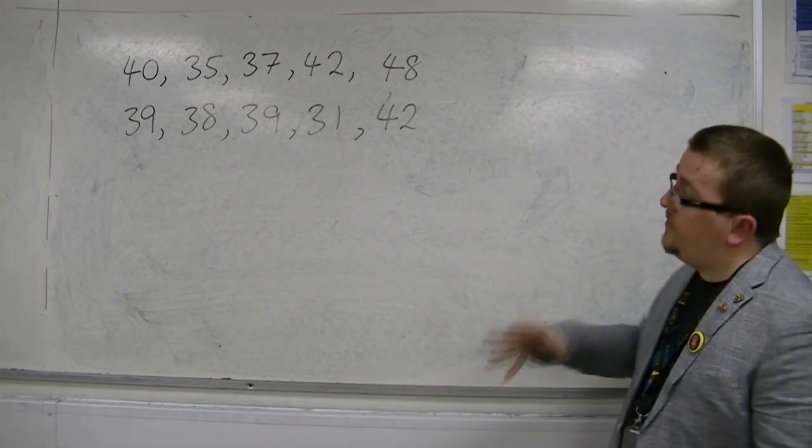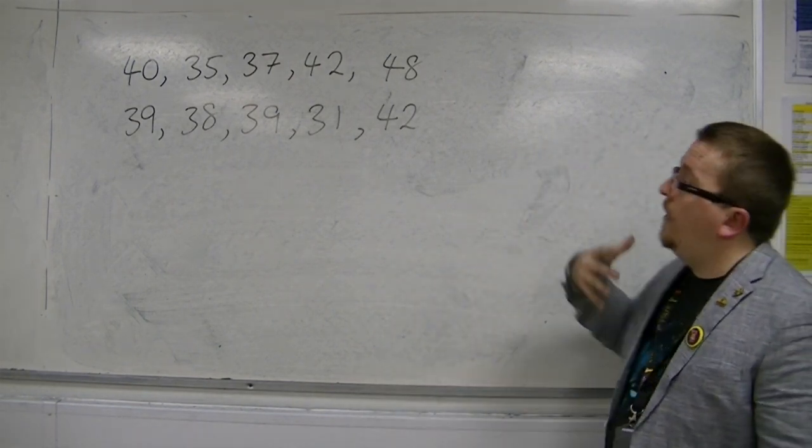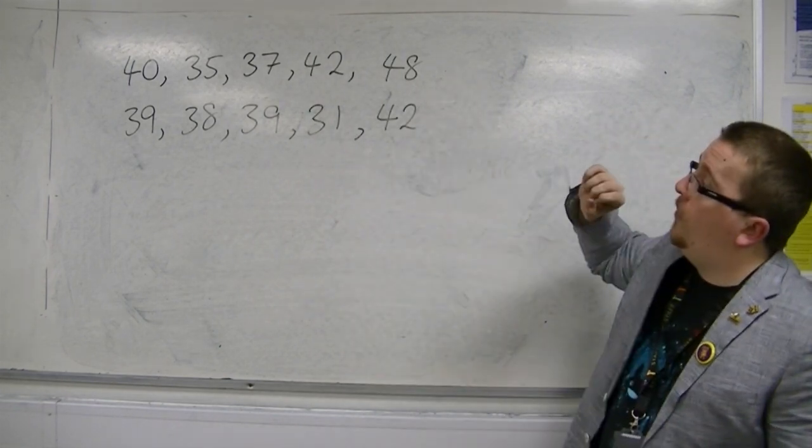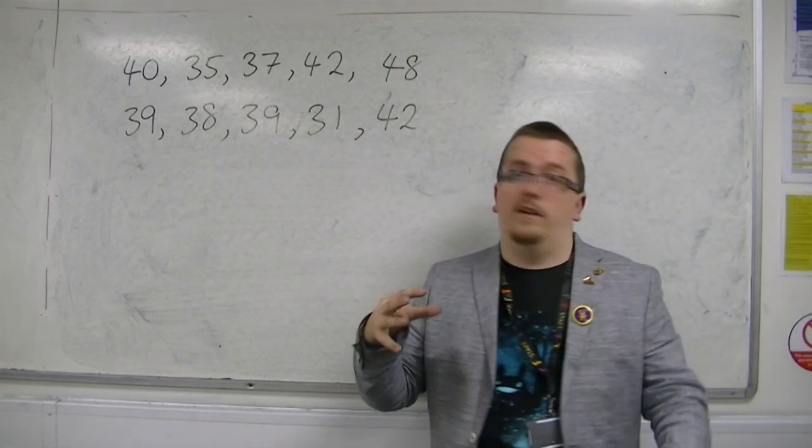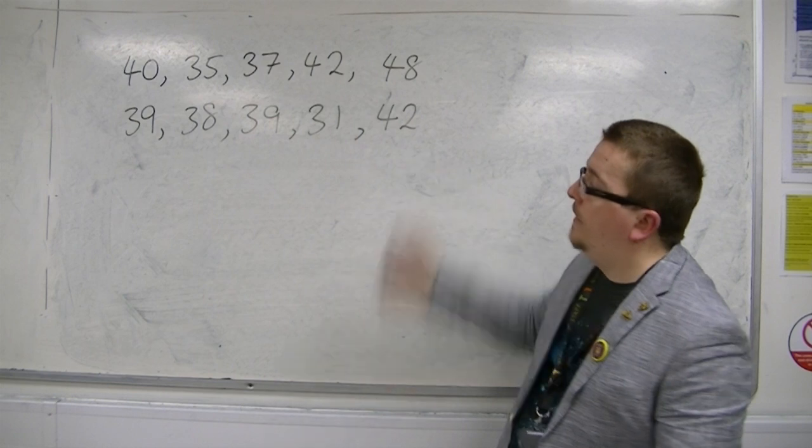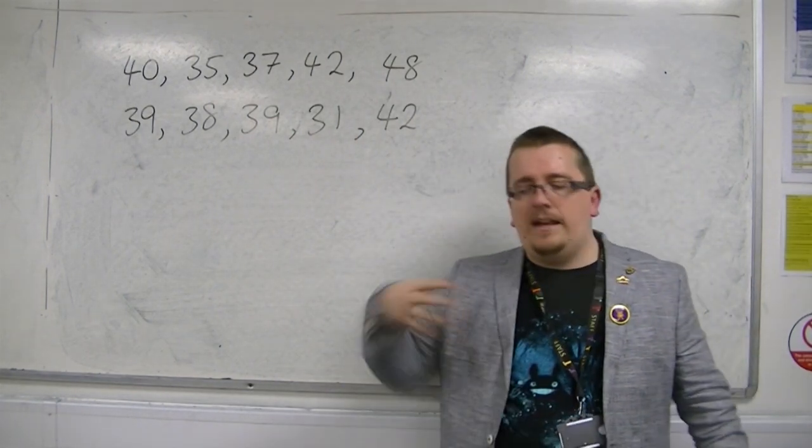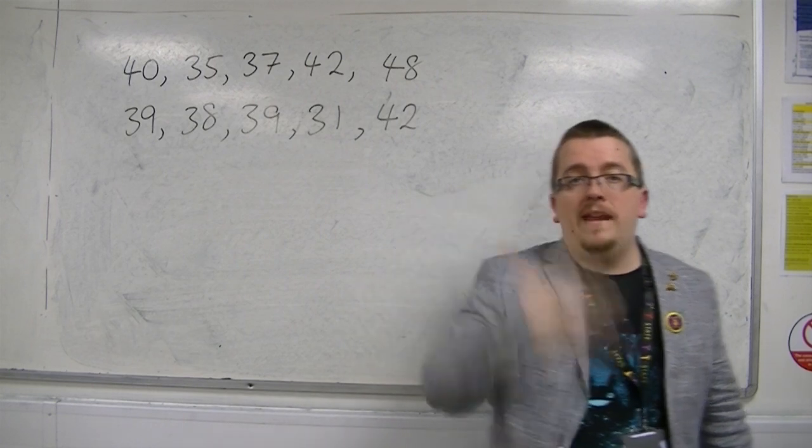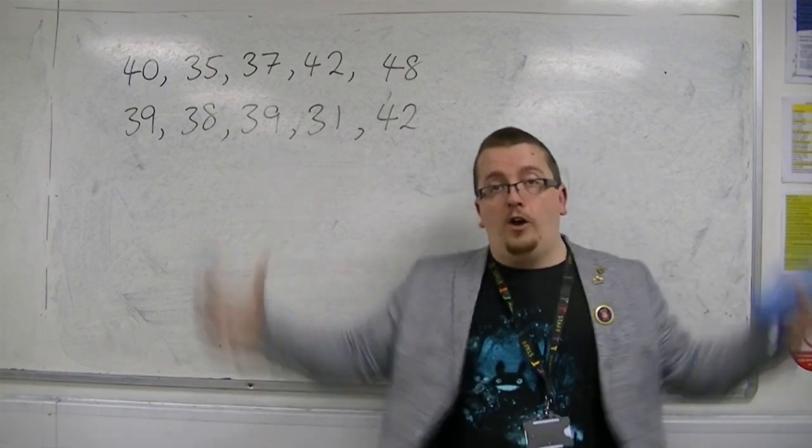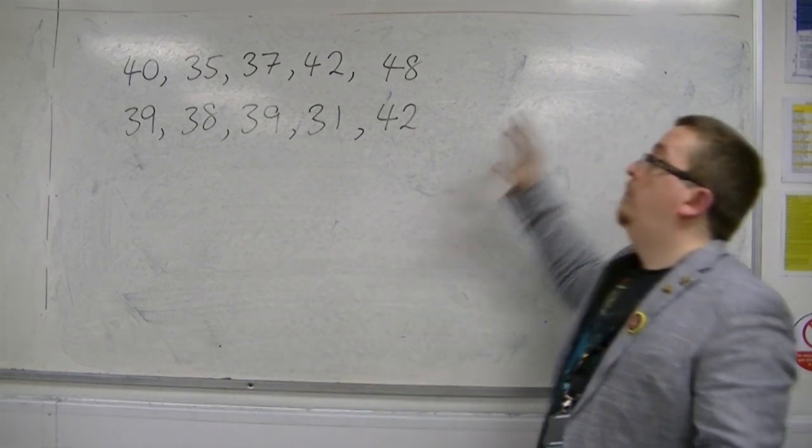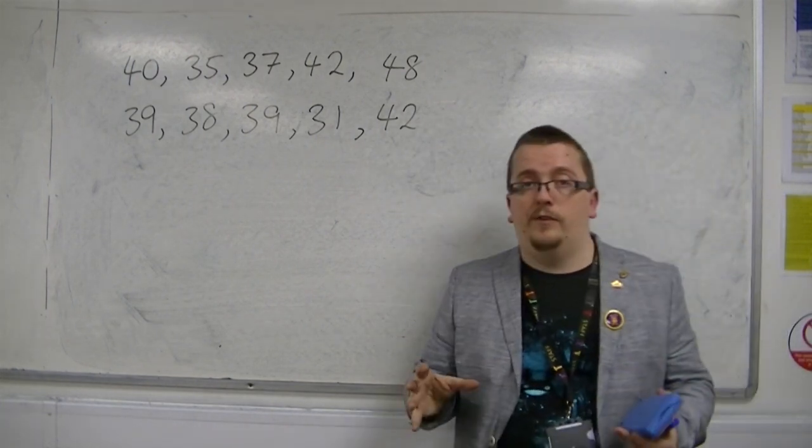What I do is I go out and take a sample. I've got a sample of 10 speeds of cars right here. I'm going to find estimates for the mean and variance of the whole population by using this sample of 10 values.